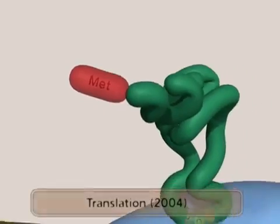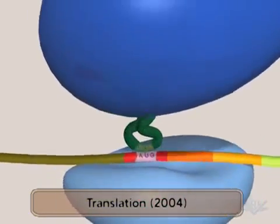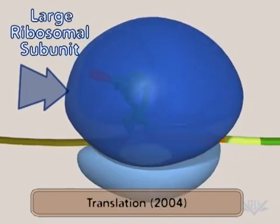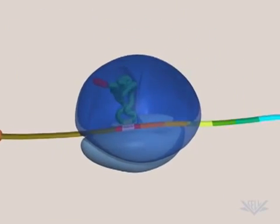Here, you can see a particulate organelle called the ribosome. It is partially composed of the rRNA we just spoke of. Attached to it is the mRNA.